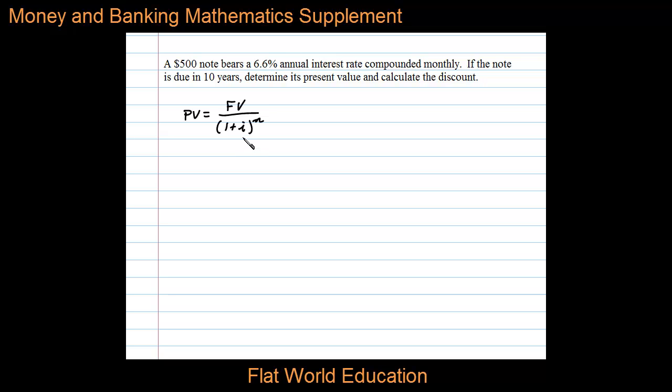Now to calculate the interest rate per period, we'll take our 6.6 percent and divide that by 12. Notice here the annual rate was compounded monthly, and so that gives us 0.55 percent interest per period. To find the number of periods, we'll take our 10 years and multiply that times 12, the number of compoundings per year, and that gives us 120 periods.